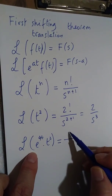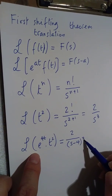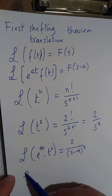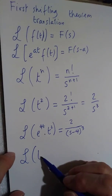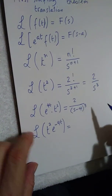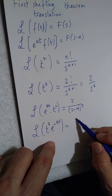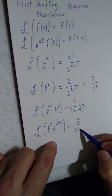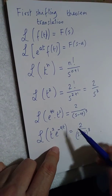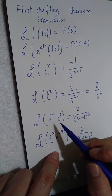So you change s to s minus 4, giving 2 over (s minus 4)³. That's the transform of e^(4t)·t². For e^(-4t)·t², the s becomes s minus (-4), which is s plus 4, giving 2 over (s plus 4)³. You can apply this shifting theorem directly from the transform of t², without recomputing.